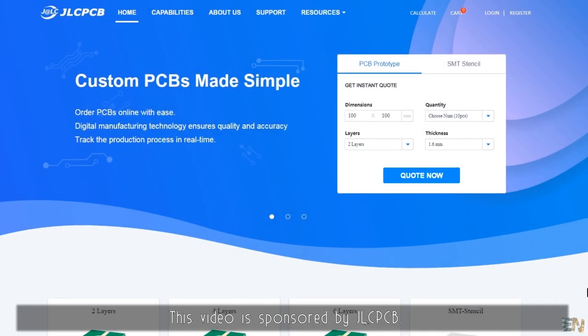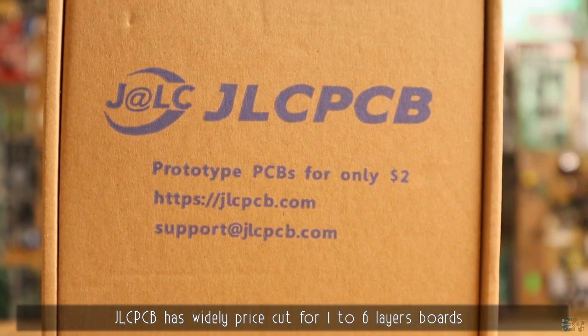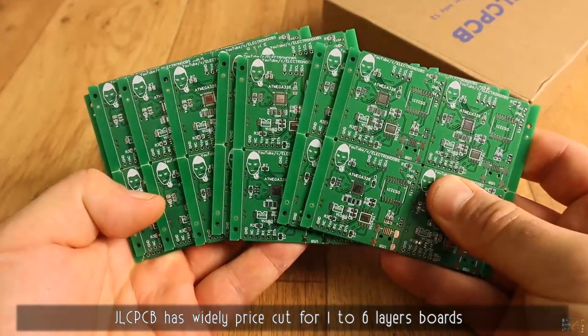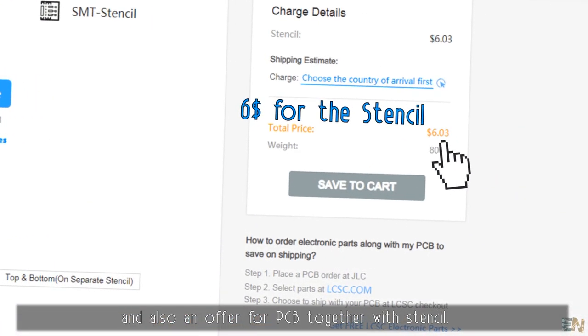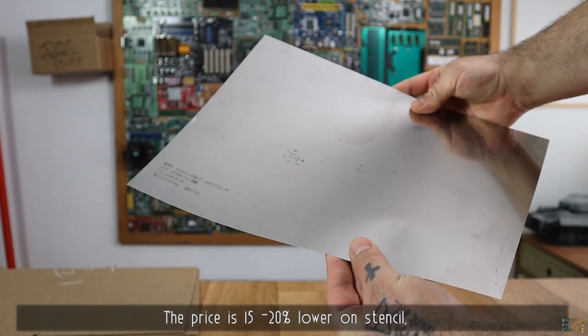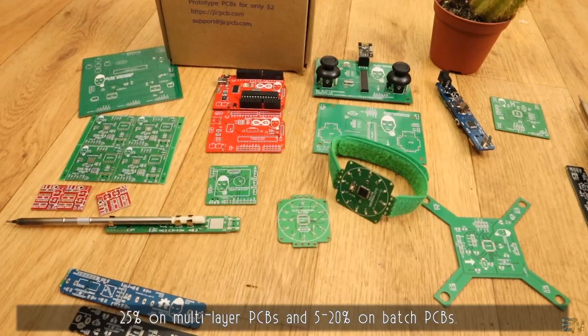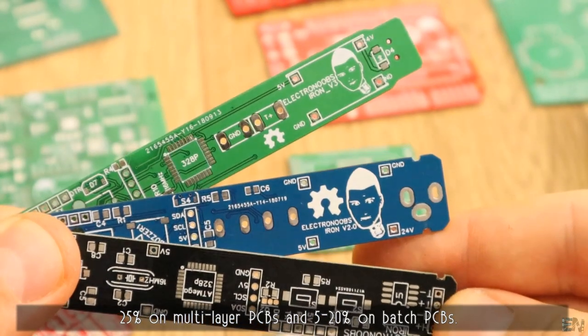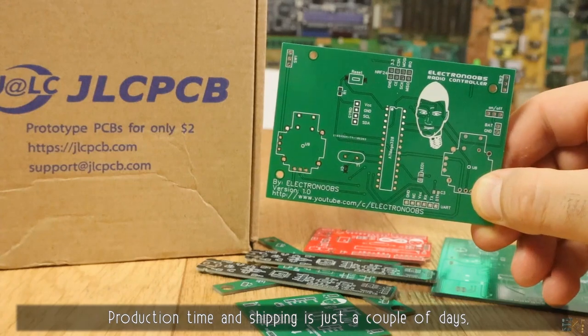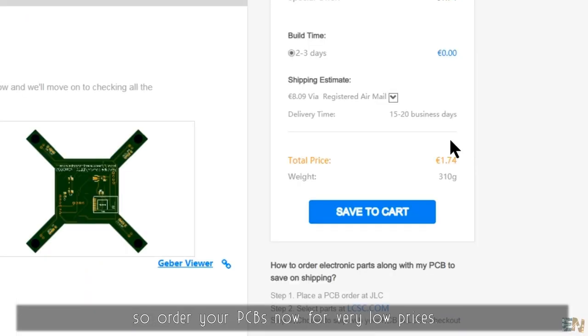This video is sponsored by JLCPCB. Great news about their services. JLCPCB has a wide price cut for 1-6 layer boards and also an offer for PCB together with the stencil. The price is 15-20% lower on stencil, 25% on multilayer PCBs and 5-20% on batch PCBs. Production time and shipping is just a couple of days, so order your PCBs now for very low prices.